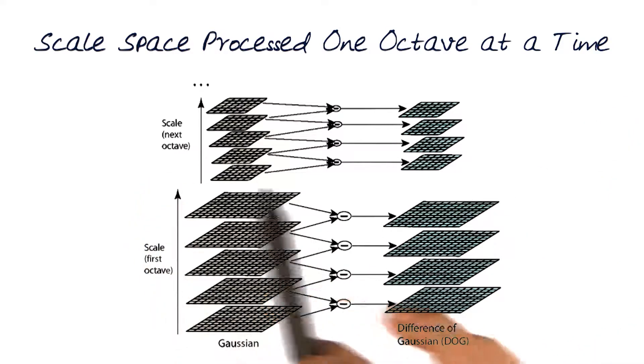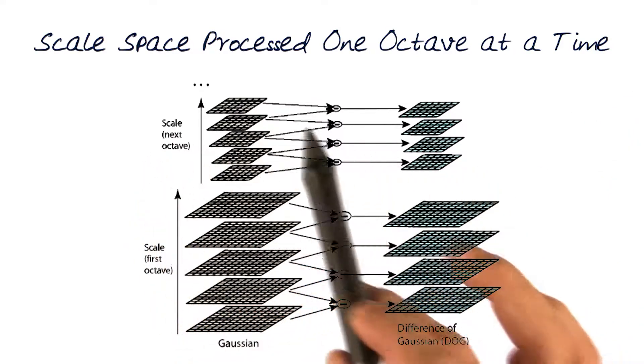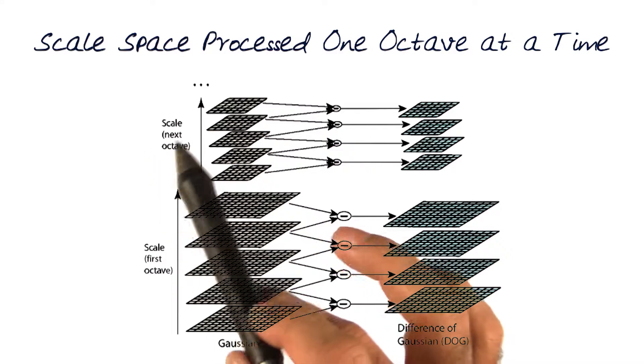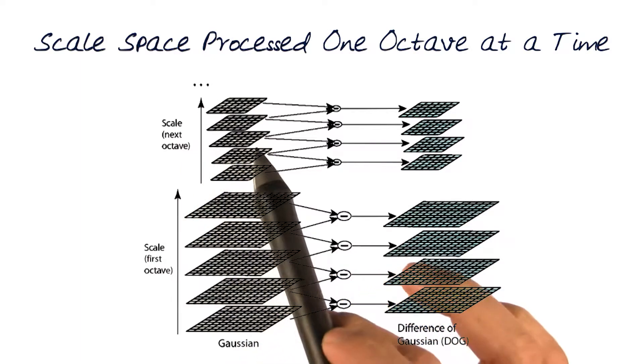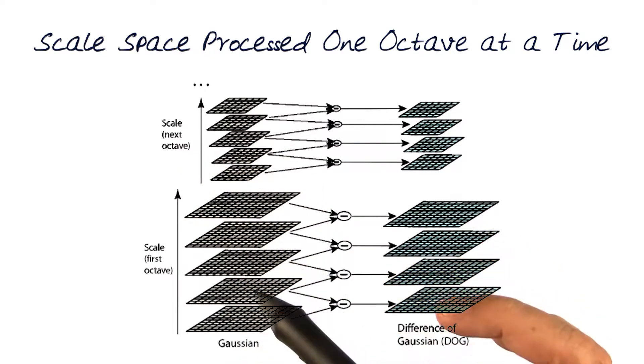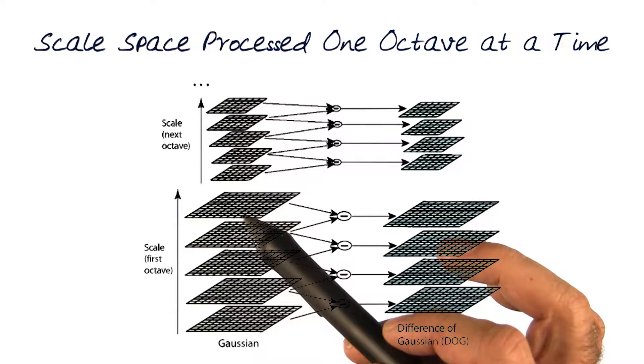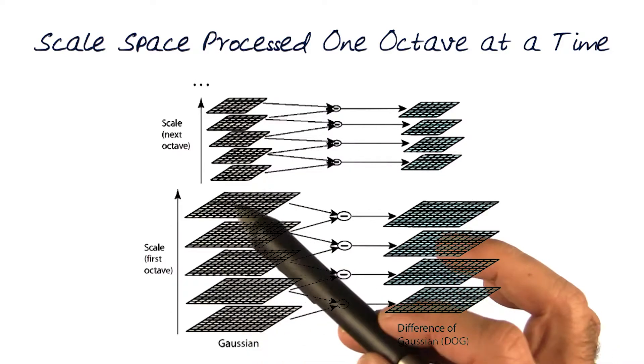What we do in these types of processes is start looking at scales at different octaves. This was one of the reasons we looked at doing this analysis at different pyramid levels, because each one of them is a different octave, and now we can actually start modeling the signal.